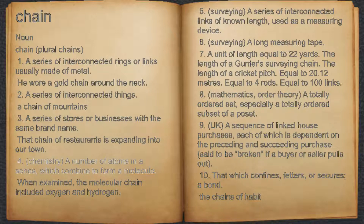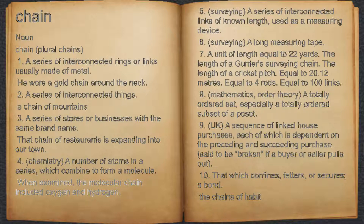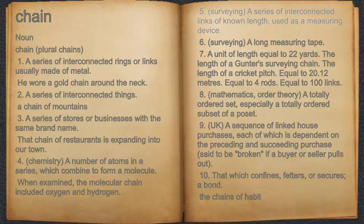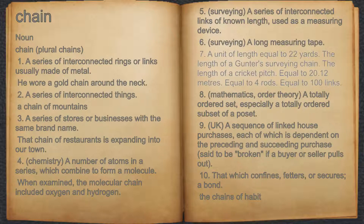4. Chemistry. A number of atoms in a series which combine to form a molecule. For example, when examined, the molecular chain included oxygen and hydrogen. 5. Surveying. A series of interconnected links of known length, used as a measuring device. 6. Surveying. A long measuring tape. 7. A unit of length equal to 22 yards, the length of a Gunter surveying chain.